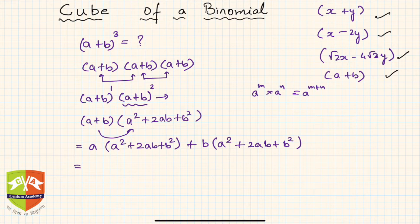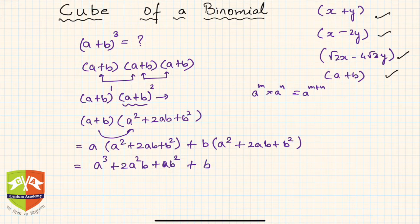Multiplying through: a gets multiplied to all three terms giving a³ + 2a²b + ab², and then b gets multiplied giving a²b + 2ab² + b³. Note that I have written a before b — some consistent order is always good.